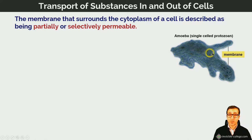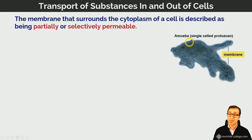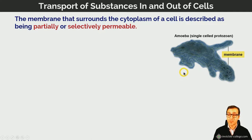Here we have an amoeba, a single-celled organism, surrounded by a plasma membrane. The amoeba has certain requirements — substances like oxygen and nutrients — to support its living processes. Since this is a single-celled organism, the only means by which it can obtain those nutrients and oxygen is by movement from the surroundings via the cell membrane into the cytoplasm of the cell.